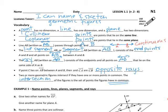This is Lesson 1.1, and when we get done with this lesson, you're going to be able to name and sketch geometric figures. There are several vocabulary terms that are important for you to understand, and I would like you to spend the time to fill in all of the vocabulary words on your note sheet.